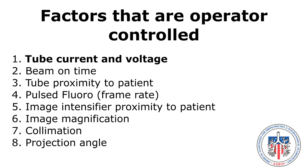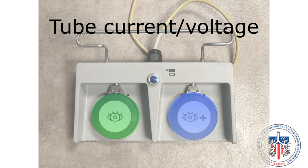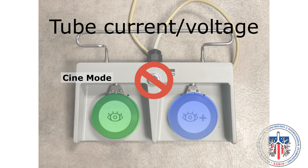First, tube current and voltage. This foot pedal has low current, high current, and cine mode. The low current pedal, highlighted in green, is what will be used in the majority of bronchoscopy procedures. The blue highlighted pedal with a plus sign — called high intensity fluoro — should not be used for routine bronchoscopy. The cine mode should never be used with bronchoscopy procedures, as it provides a high radiation dose that is not necessary.